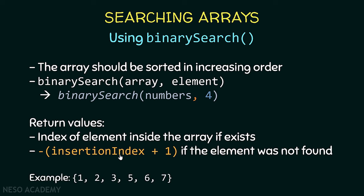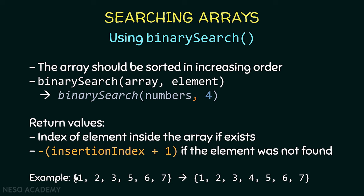What is the insertion index? Suppose we have a sorted array and we want to insert the element four while keeping the array sorted. We would insert it between three and five, because four is less than five and greater than three. The insertion index is the index where we insert an element such that the array remains sorted. So the insertion index of element four is three. If we search for four in an array that doesn't contain it, the method returns the negative value of the insertion index plus one, which is -(3+1) = -4.